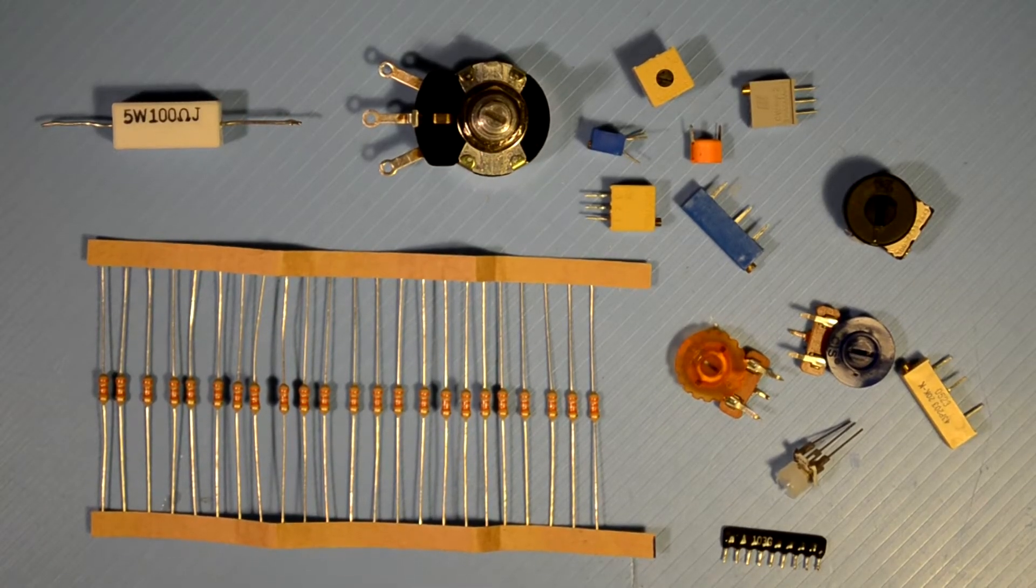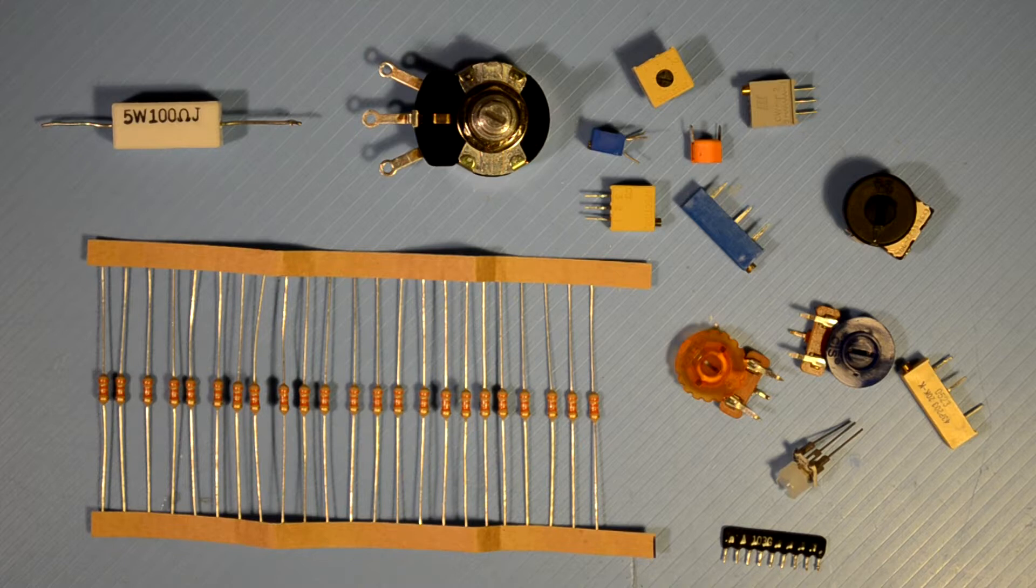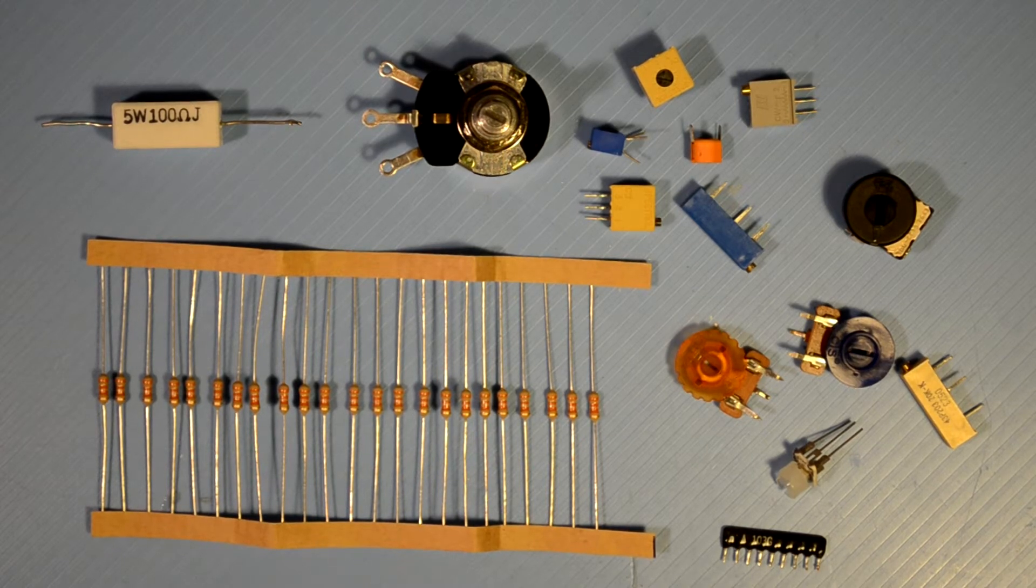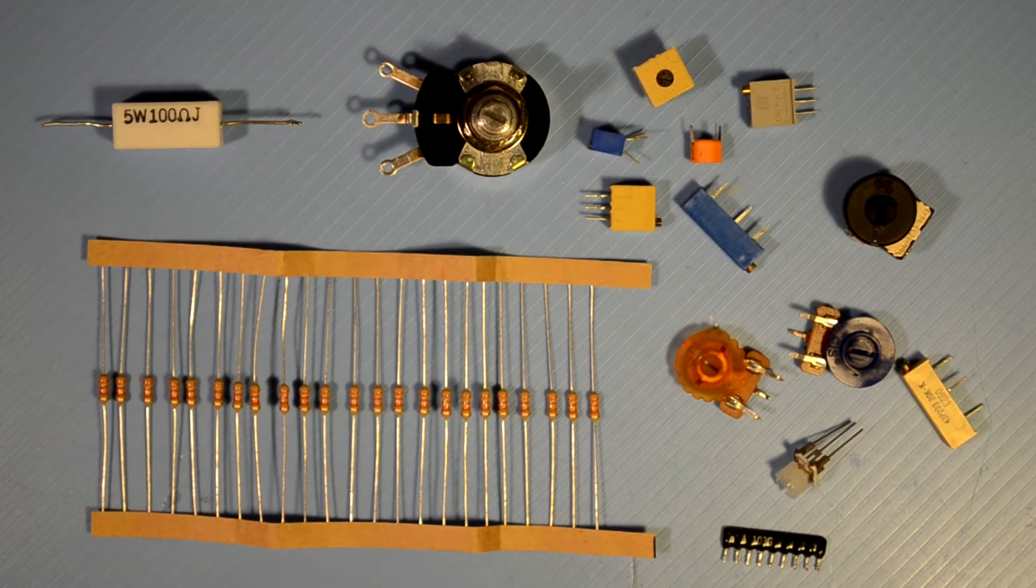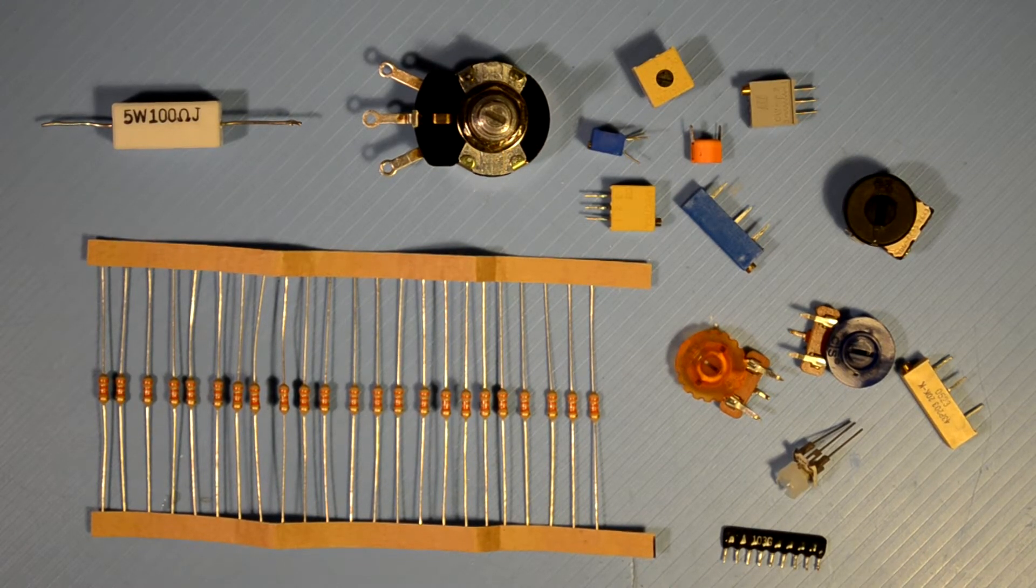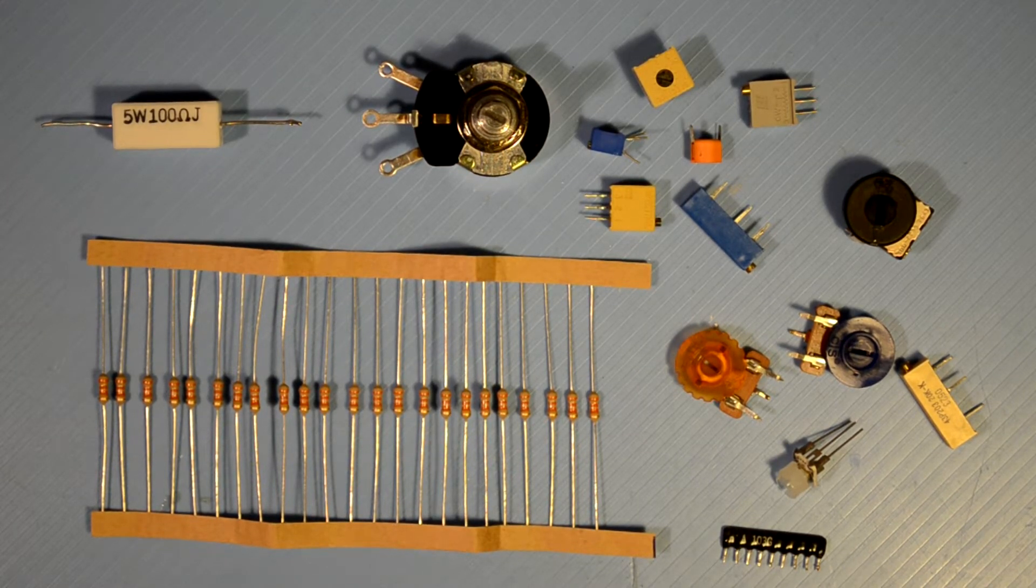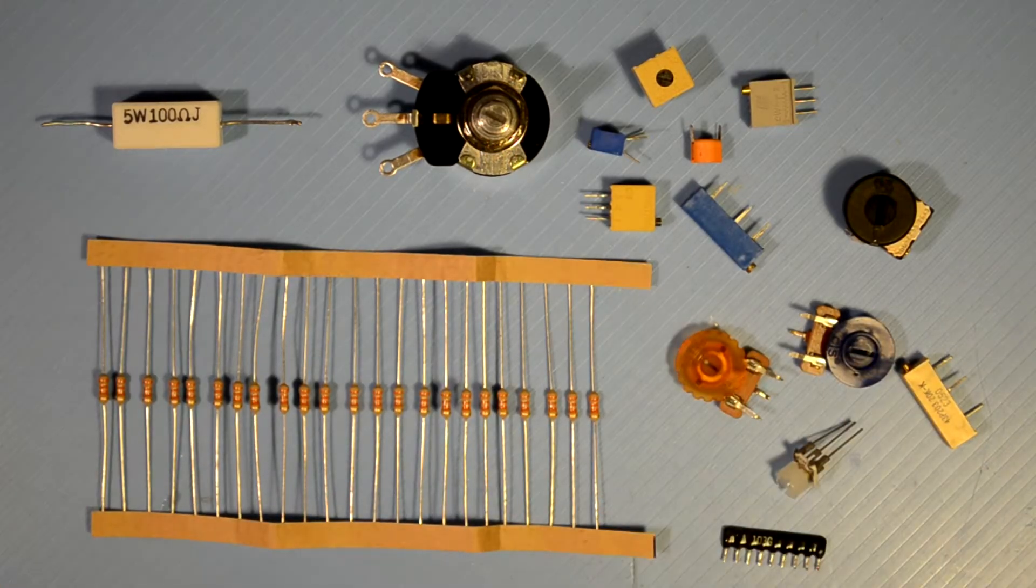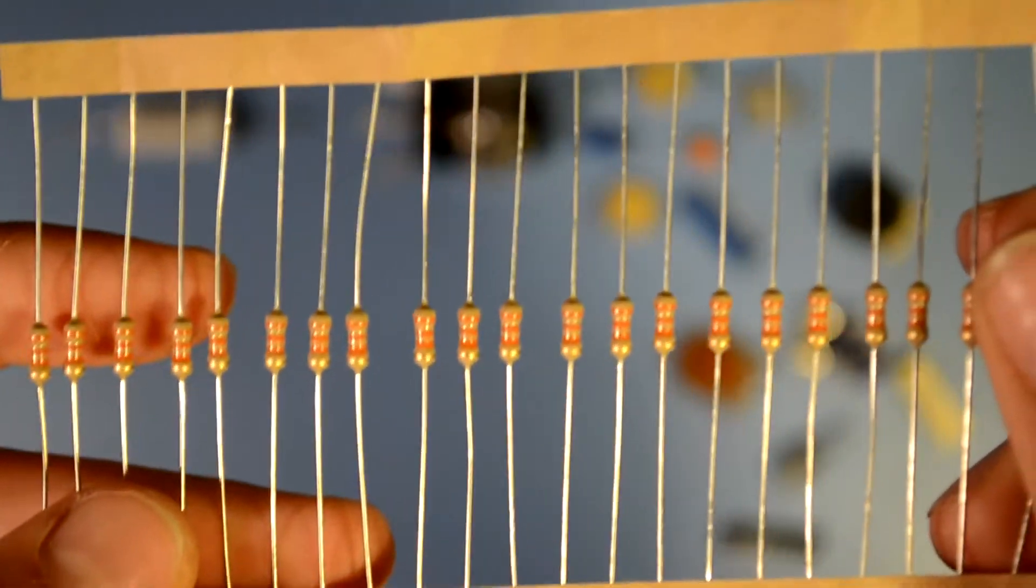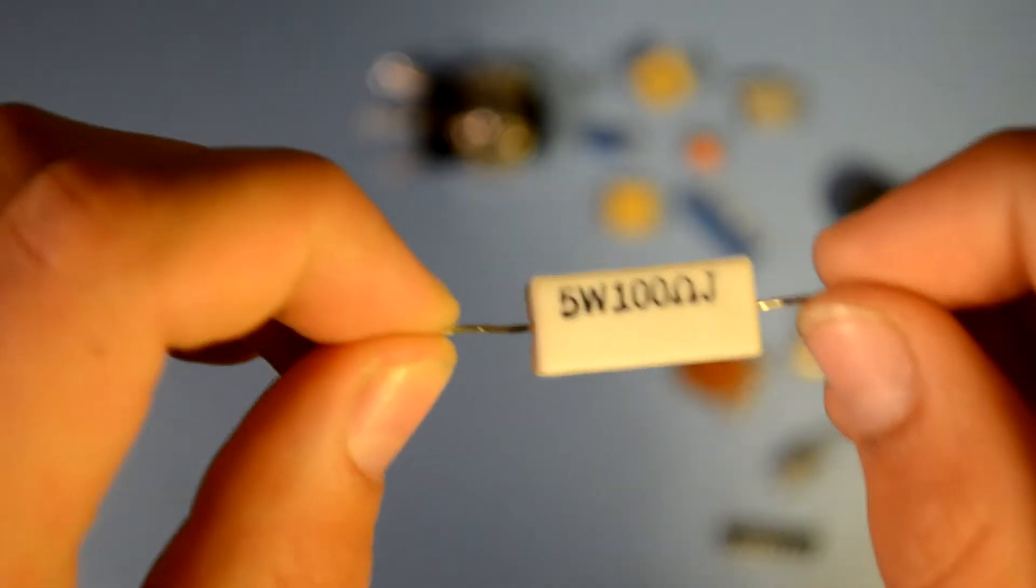Alright, the first passive component that we're going to be talking about is resistors. Now these, in electronics, are probably the most common component ever, really. You're going to see them the most, most likely, depending on the circuit. But they come in many different forms, as you can see. These are your standard quarter watt resistors. This is a 5 watt resistor.